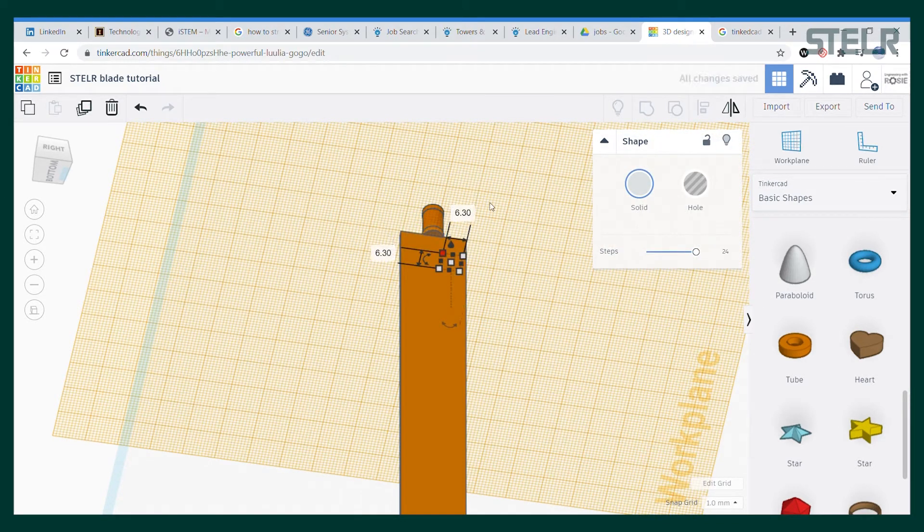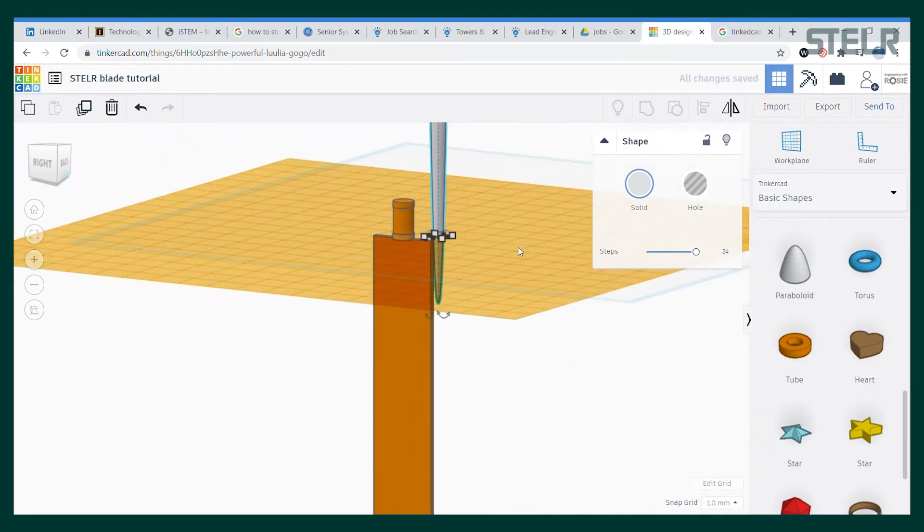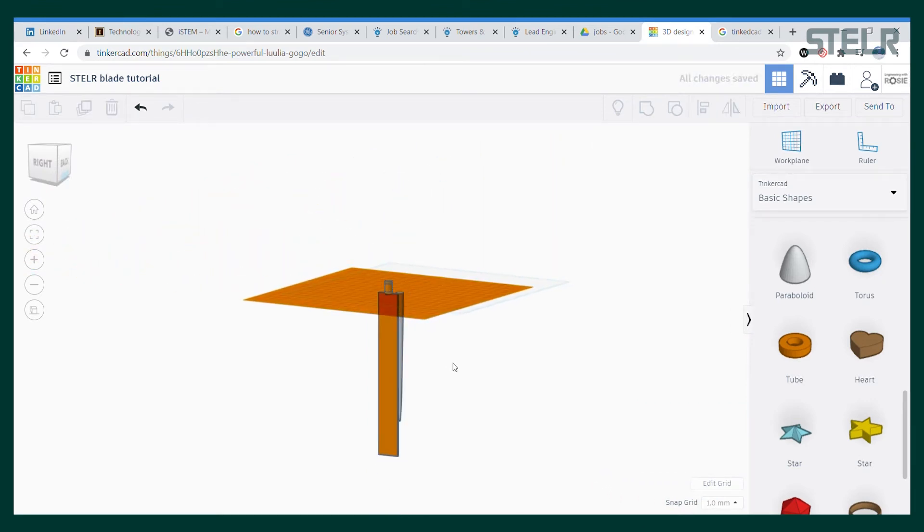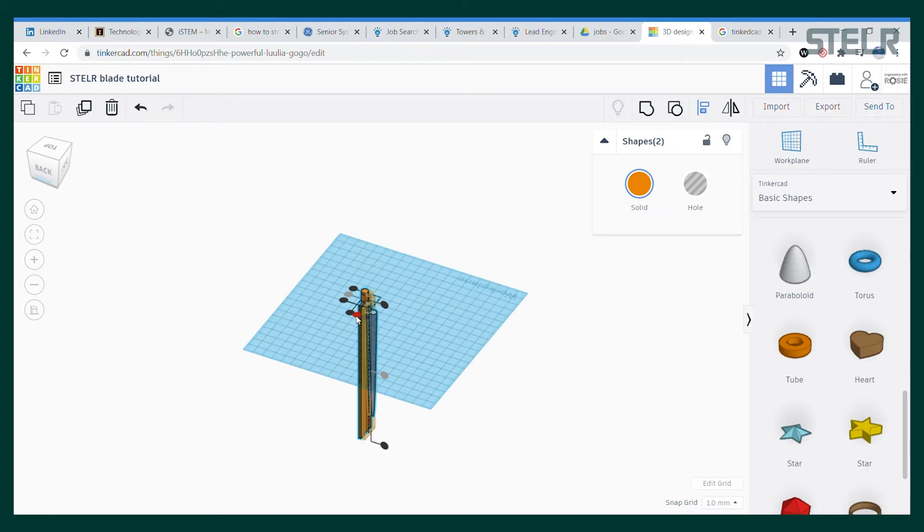It has a diameter of 6.3 by 6.3 millimeters and I will make it 120 millimeters long. Then select and press D to drop it onto the work plane. We align the centers and we group it into one part again.